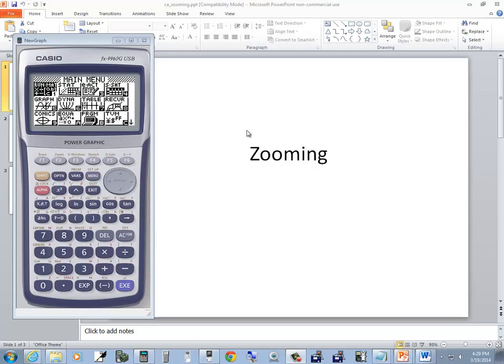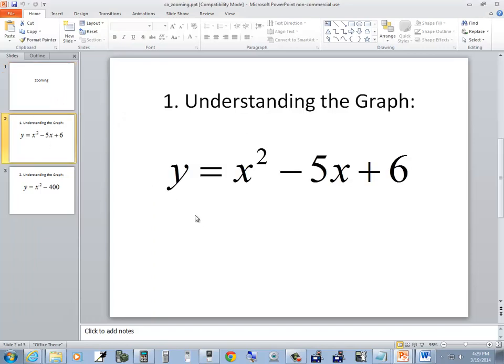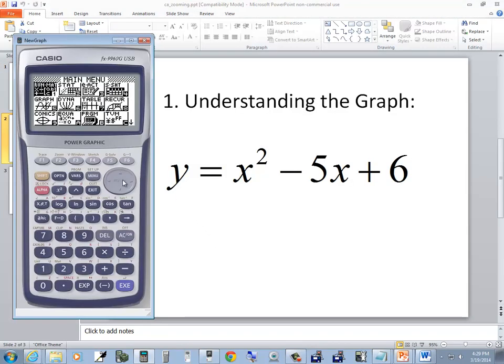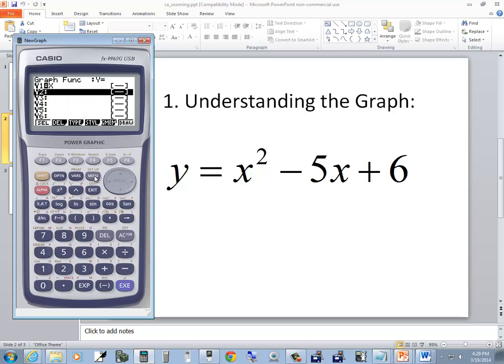Now I'm going to take a look at, specifically, looking at this one: Y is equal to X squared minus 5X plus 6. The first thing I want to do is go down to my graph. If you're not on main menu, press your menu and you'll get there. Then down arrow to graph and press EXE.